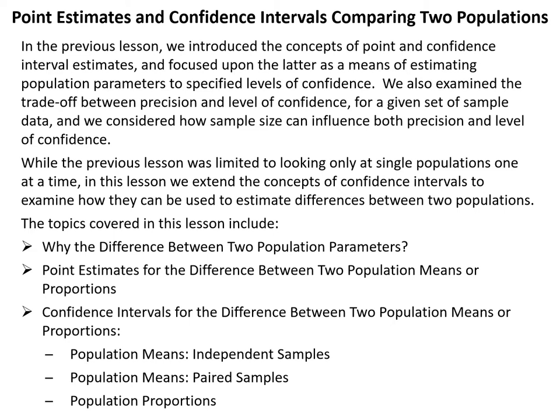The topics covered in this lesson include: why the difference between two population parameters; point estimates for the difference between two population means or proportions; confidence intervals for the difference between two population means or proportions, broken down into population means for independent samples and for paired samples; and finally, population proportions.